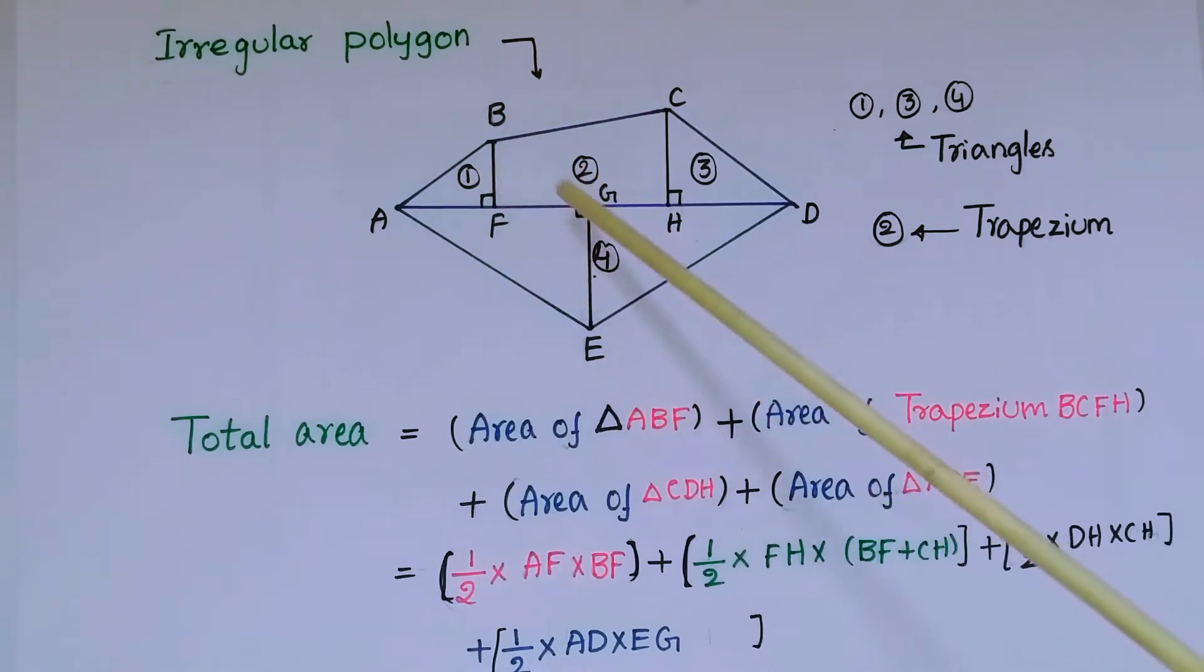This triangle ABF and area of trapezium BCHF and area of this triangle CDH and again area of this triangle ADE.